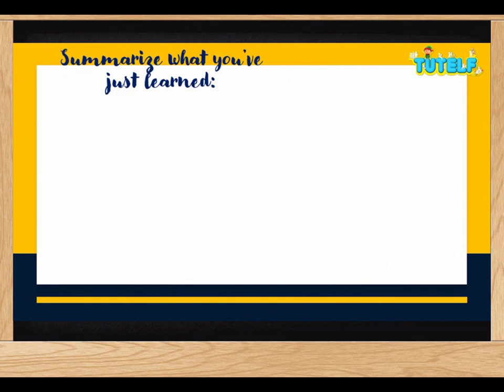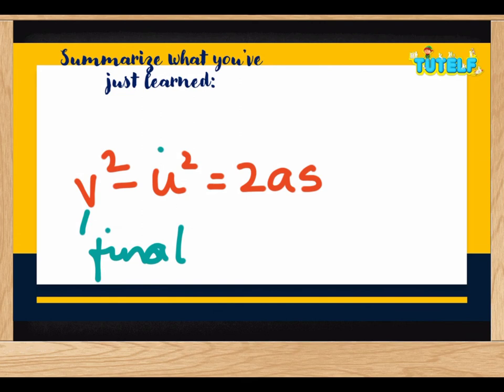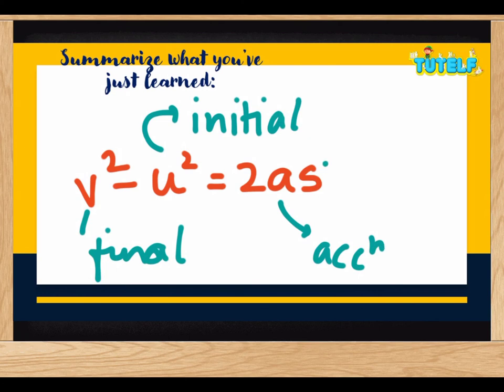So today we have done the position velocity relation which is V square minus U square is equal to two AS, where V is the final velocity, U is the initial velocity, A is the acceleration and S is the displacement. Why displacement? Because it is a velocity time graph. So the area under a velocity time graph gives you displacement and area under the speed time graph gives you the distance. I hope this is clear to you.